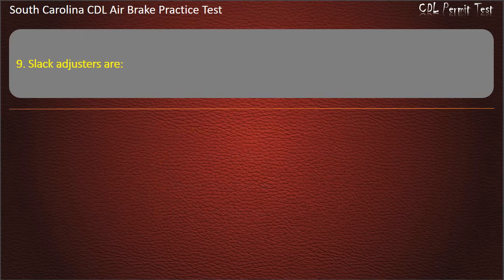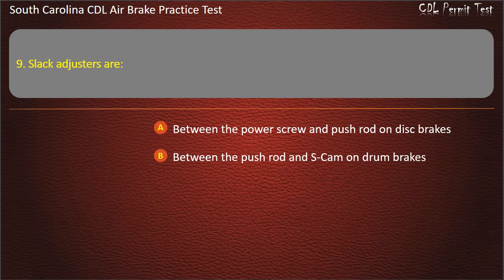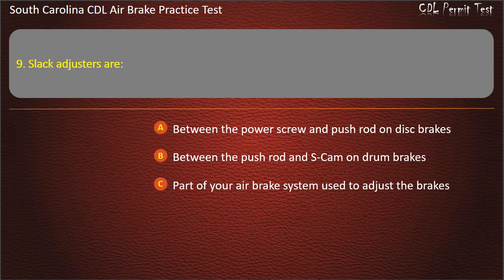Question 9: Slack adjusters are — between the power screw and push rod on disc brakes; between the push rod and S-cam on drum brakes; part of your air brake system used to adjust the brakes; or all of the above. Answer: All of the above.